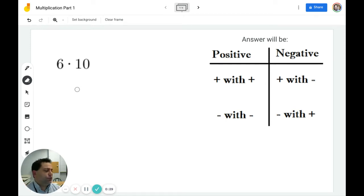So the first thing I want to draw your attention to is the chart in the upper right. Here, this is how you can determine what the sign of your answer will be. It's easy to remember: if you have two integers with the same sign, so a positive multiplied by a positive or a negative multiplied by a negative, then your answer will always be positive. If you have two integers with the opposite sign, so a positive and a negative, and you're multiplying, then the answer will be negative.